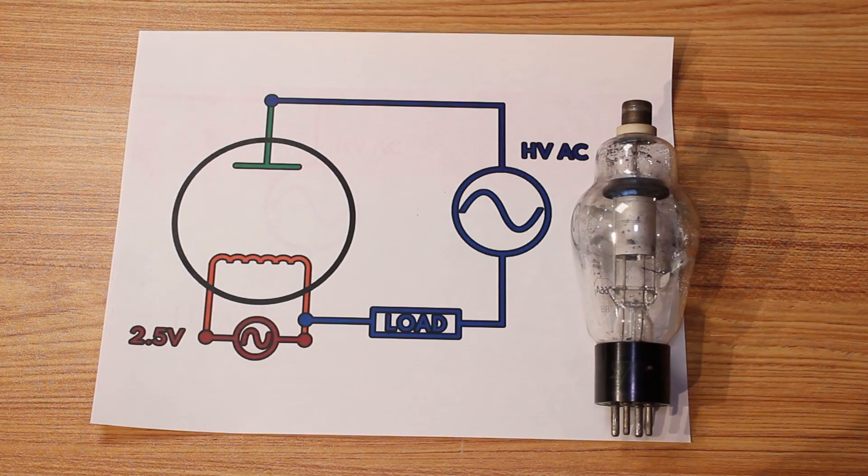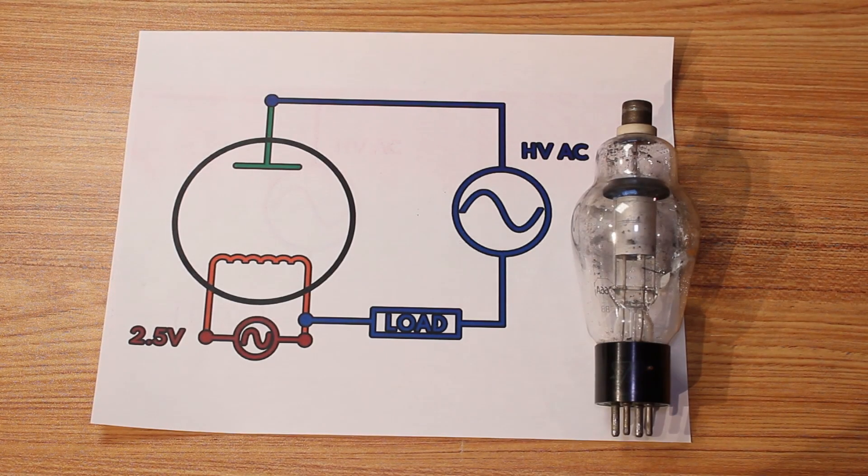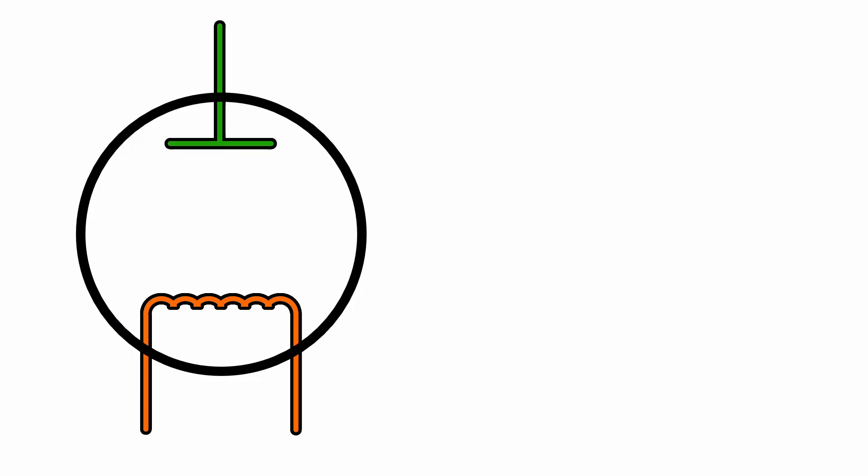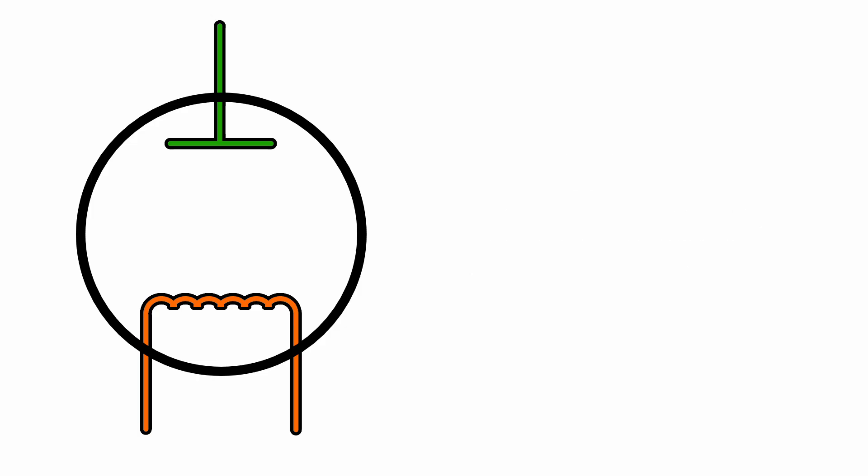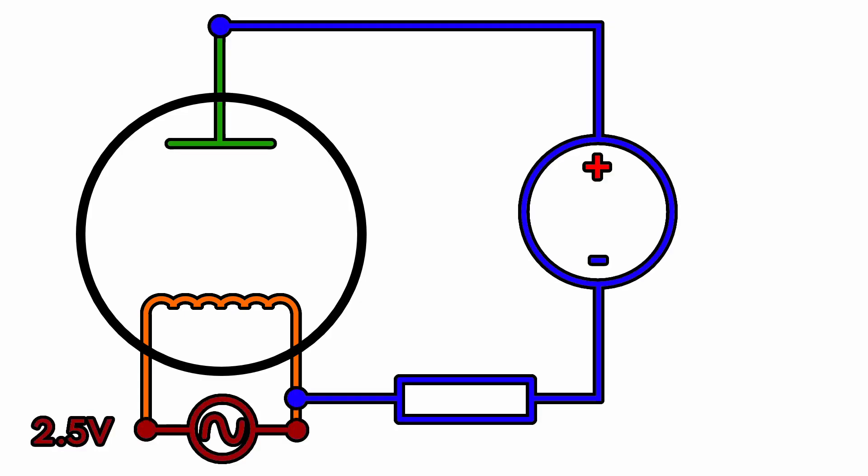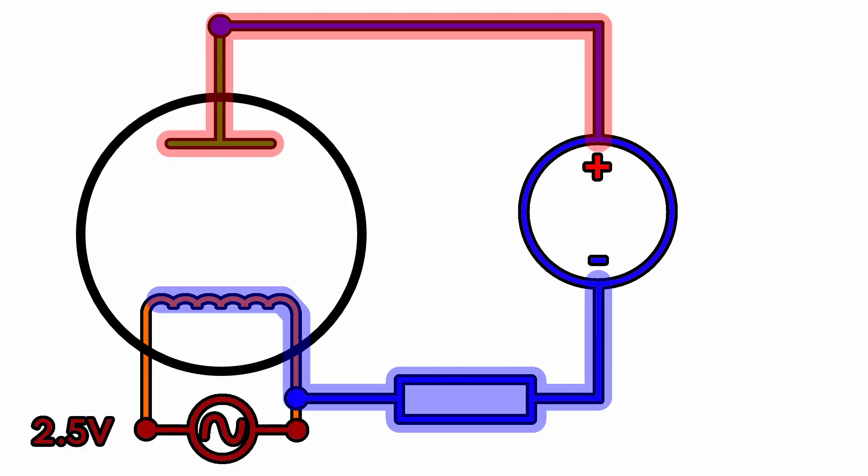So what is a mercury vapor rectifier? Well it's in the name actually. It's just a rectifier, and a rectifier is just a diode. And it works almost identically to a regular directly heated vacuum tube diode. So we have a filament at the bottom here, and then we have a high voltage power supply.